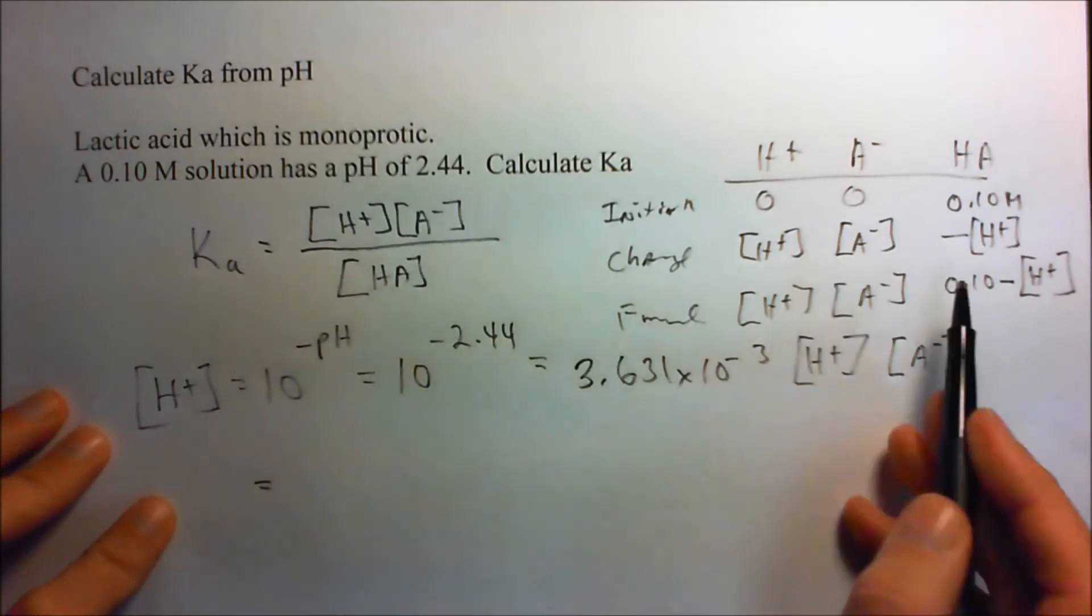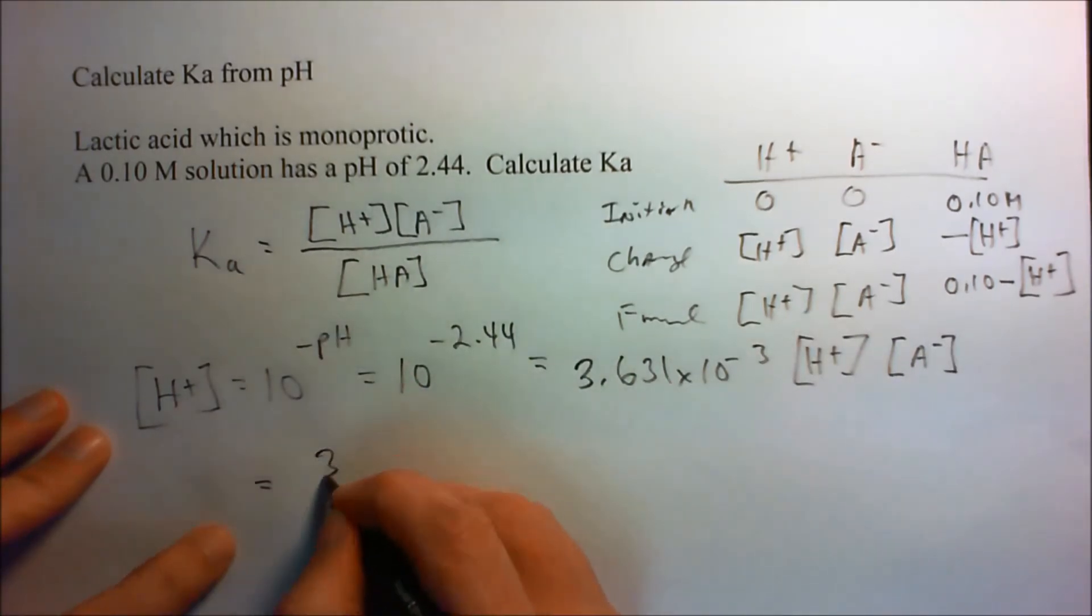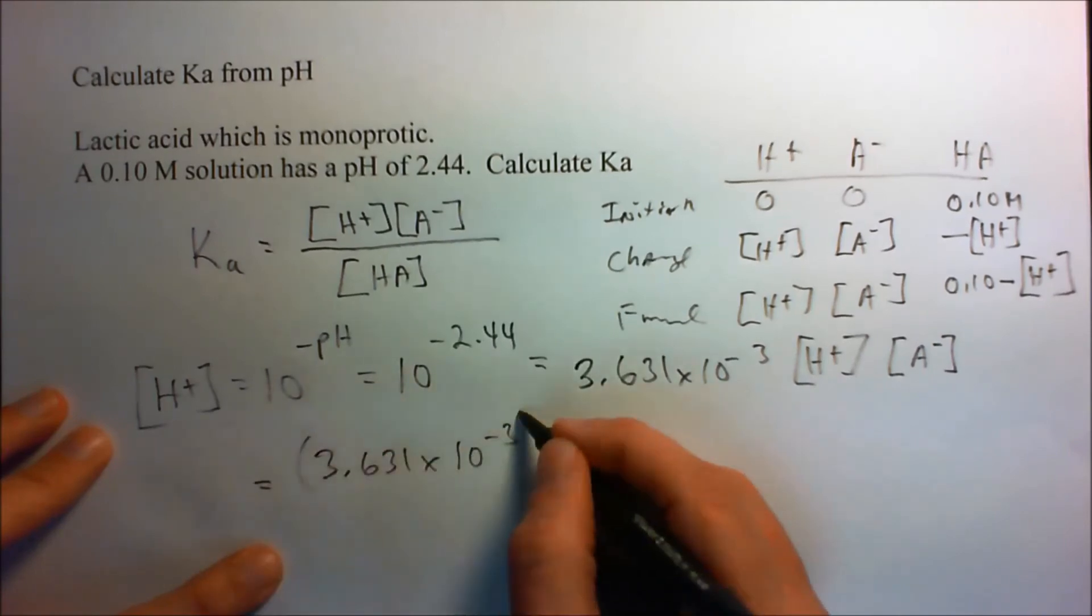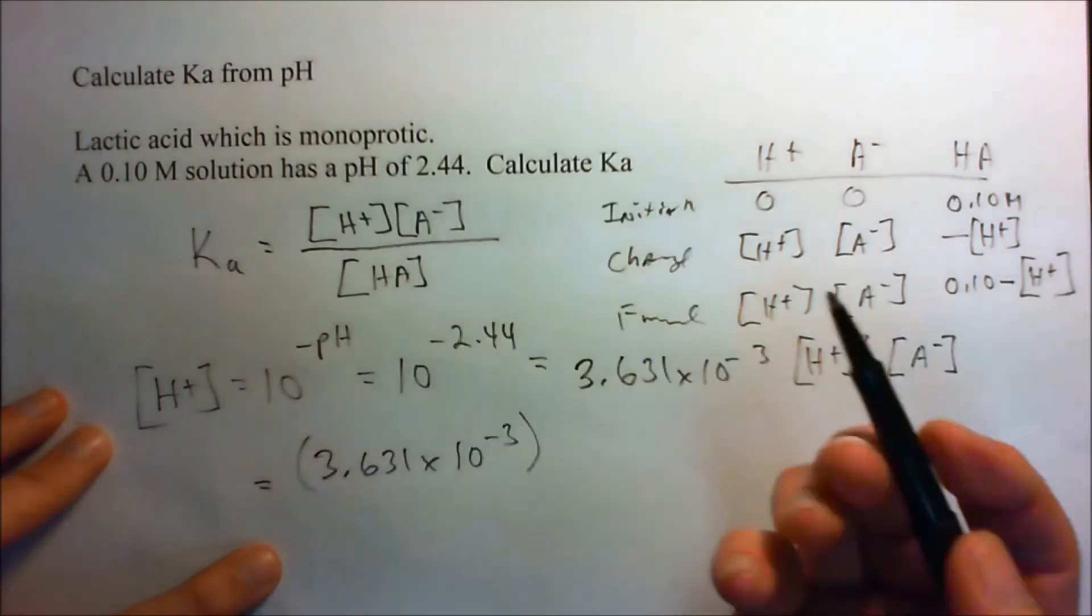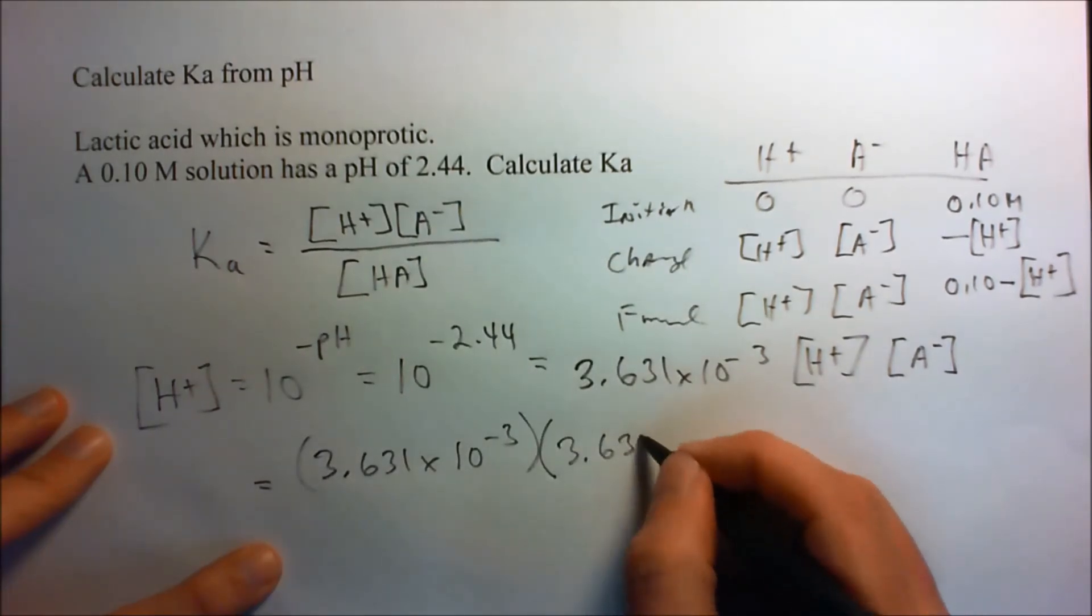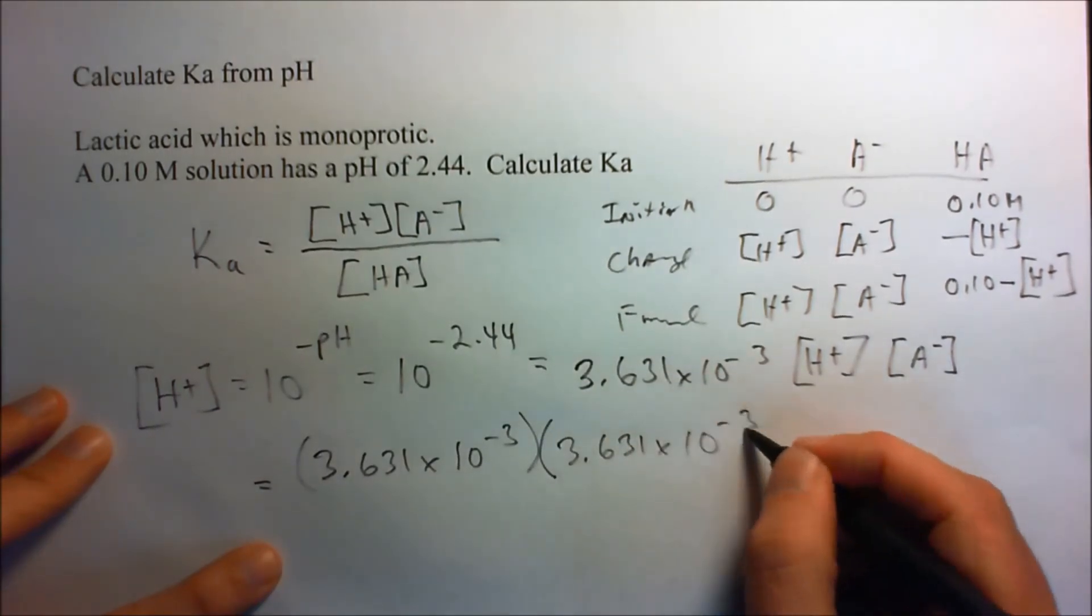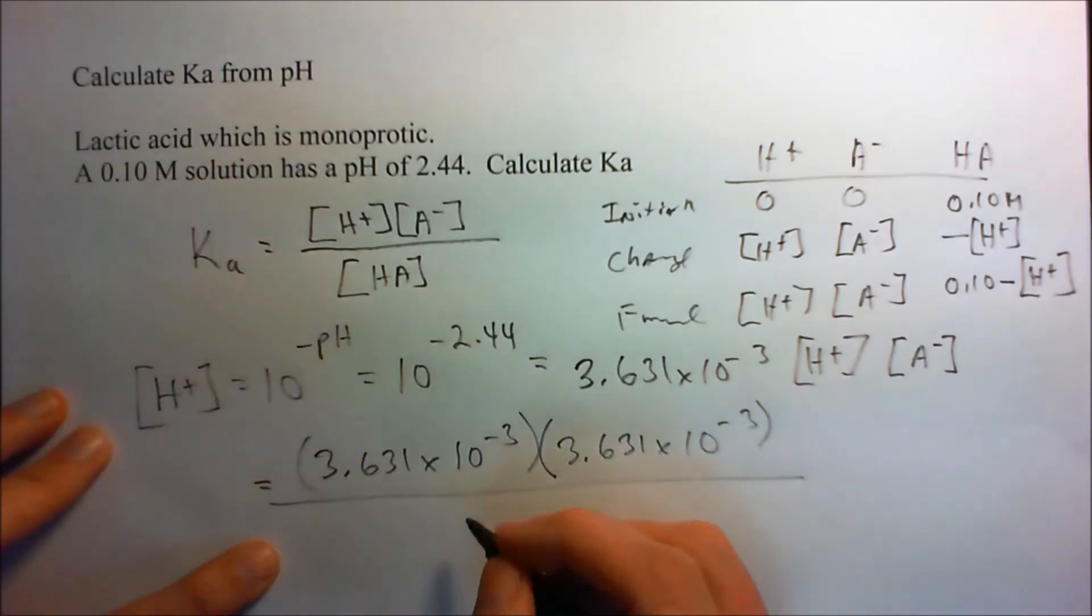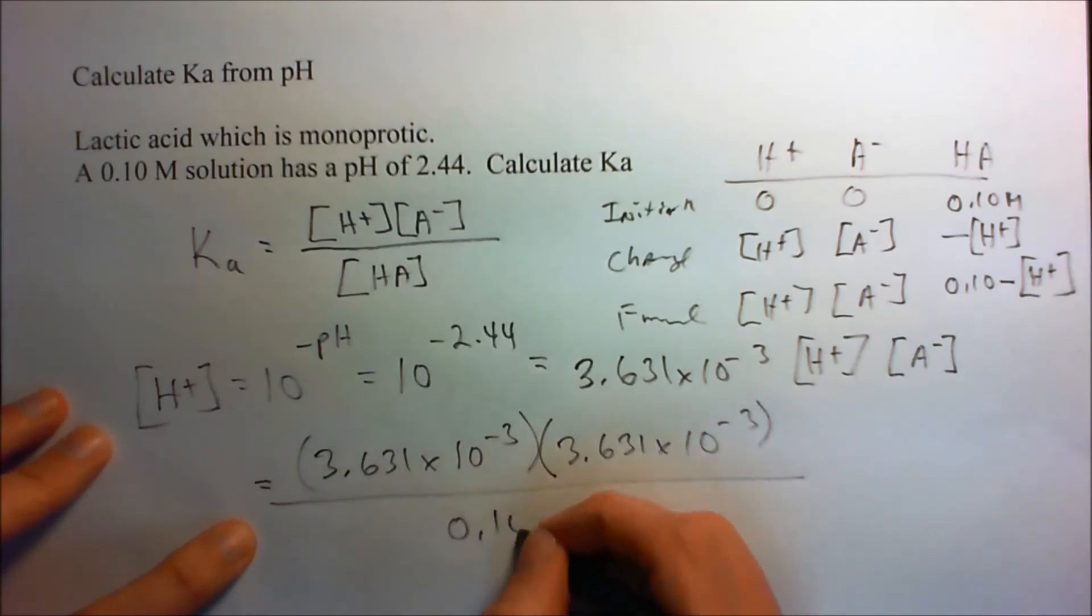So, we've got the H plus concentration. We have our conjugate base, which is the same as the H plus concentration. And we can divide it all over by the molarity of the solution, 0.10.